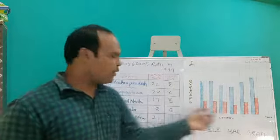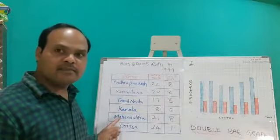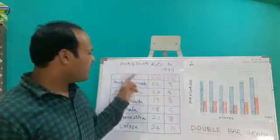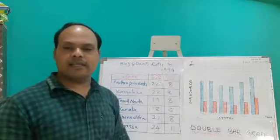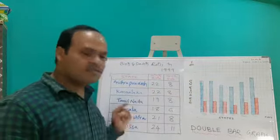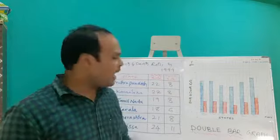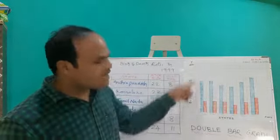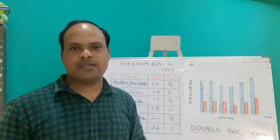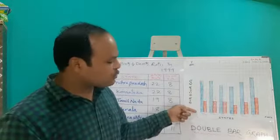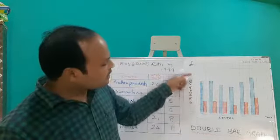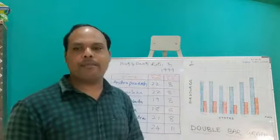On the x-axis, I have taken names of the states given in the data. On the y-axis, I am going to take birth rate and death rate. Now, if you see the birth rate and death rate, the highest number is 24. As I don't have 24 squares here on the y-axis, here I need to go for a suitable scale. Here I am taking each square as 2 units. So I can represent 24 easily on the graph paper.